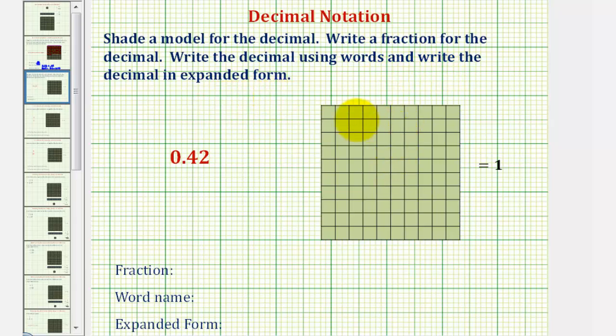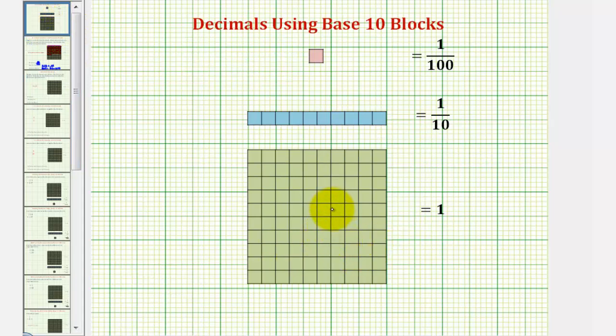Let's begin by defining our decimal grid. The ten by ten grid, often called a flat, is equal to one. The one by ten grid, often called a long, is equal to one tenth. And the one by one grid, often called a bit, equals one hundredth.